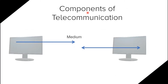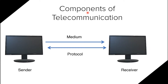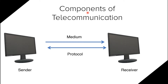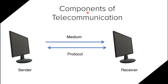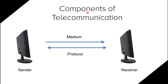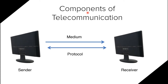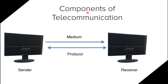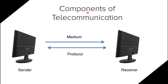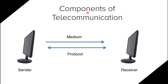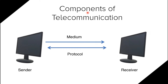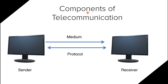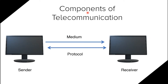Let's move on to the components of telecommunication. Components of telecommunication are similar to those of communication but are more digital. We have a sender computer and a receiver computer — it doesn't have to be a computer, it can be any digital equipment. The sender sends information, the receiver receives it, the medium is the path through which the information travels, and the protocol is the set of rules which must be followed during the transaction.